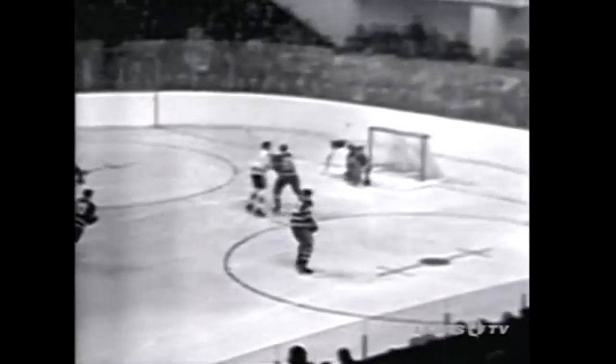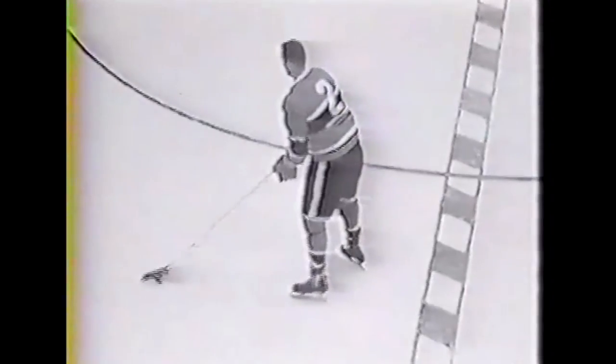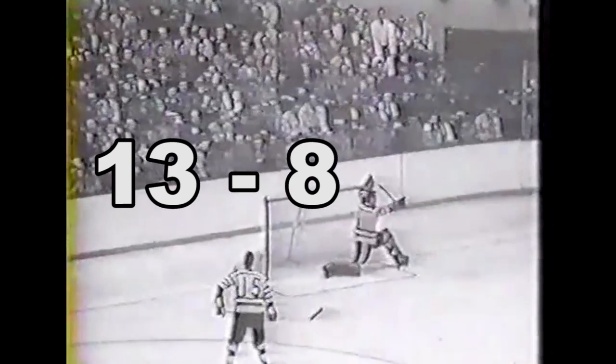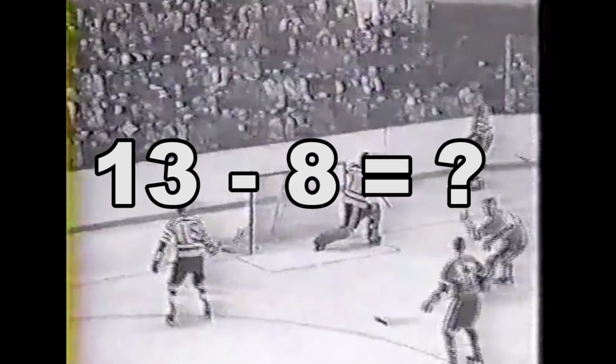A player's Corsi number is the sum of all shots directed by a team towards the opposition's net, minus the sum of shot attempts directed to their own net. For example, if a team directs 13 shots toward their opponent's net and allows 8 on their own net while a player is on the ice, his Corsi would be 5.